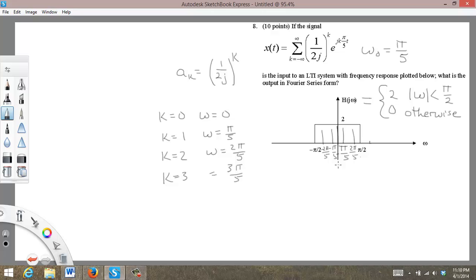So y of t is going to equal the sum from k equal minus 2 to 2 of 2, the amplitude of the filter, times a sub k, 1 over 2j to the k,